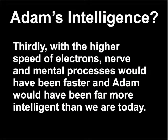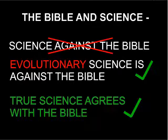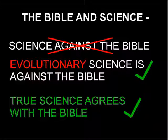Thirdly, with a higher speed of electrons, nerve and mental processes would have been faster, and Adam would have been far more intelligent than we are today. So it can be seen that the decrease in the speed of light has many implications that support the creationist evidence of features of the earth when it was first created six thousand years ago.